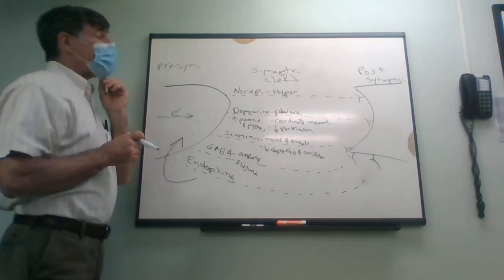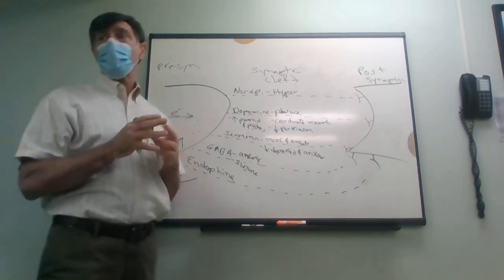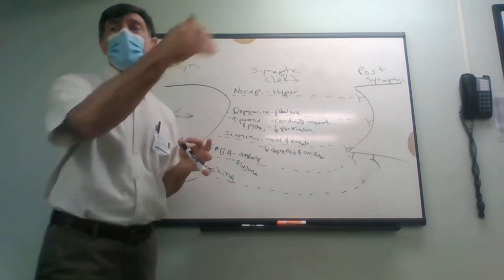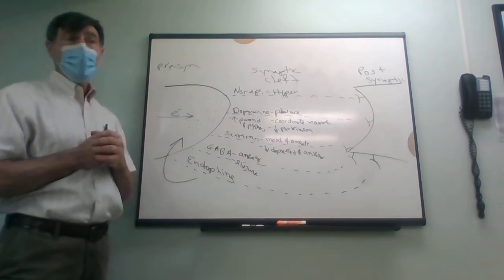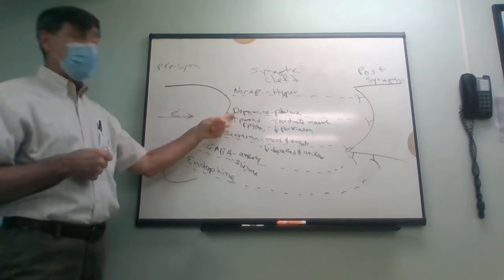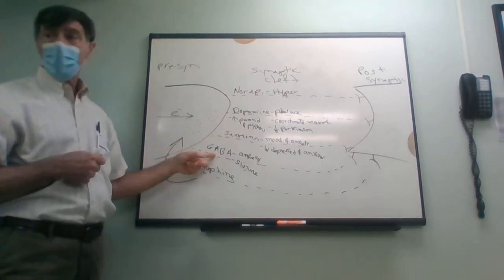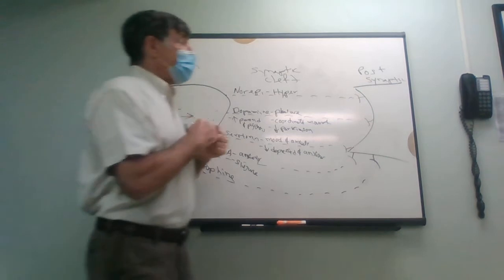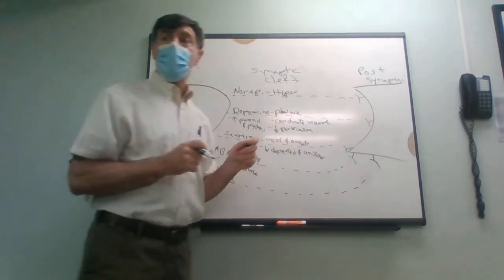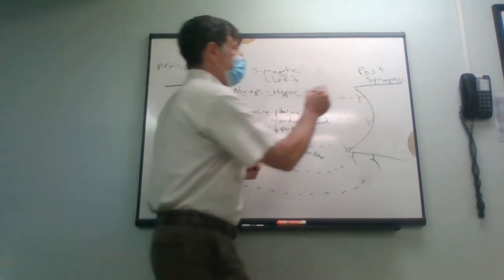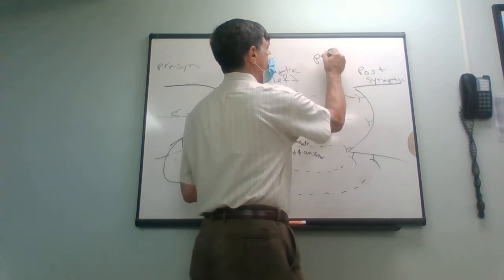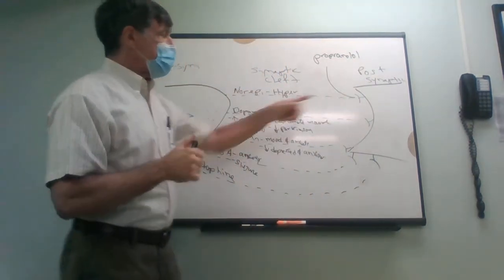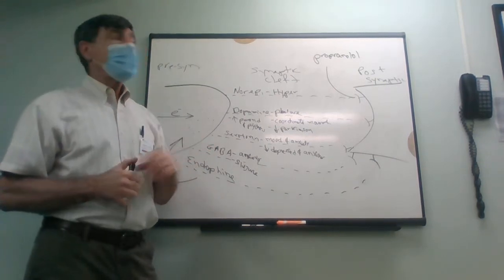Let's look at some common mental disorders. All of us are on the continuum for all these disorders — the question is how much environmental stimulus would it take for us to get that disorder. Anxiety could be too much adrenaline, maybe too much dopamine, maybe not enough serotonin, not enough GABA, or not enough endorphins.